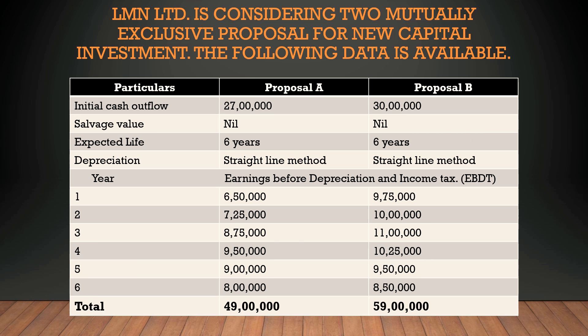The different thing in this problem is the data given to us. Initial cash outflow for Proposal A is 27 lakh rupees and for Proposal B is 30 lakh rupees, so the initial cash outflows are different. Salvage value — that is the scrap value when a machine exceeds its expected life and is sold off — is given as nil for both machines. The expected life for each machine is six years.